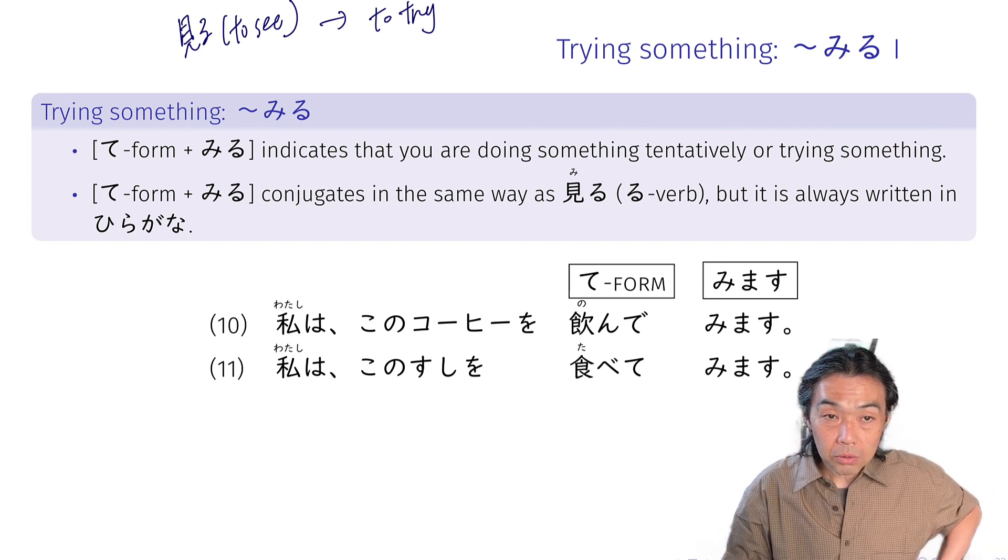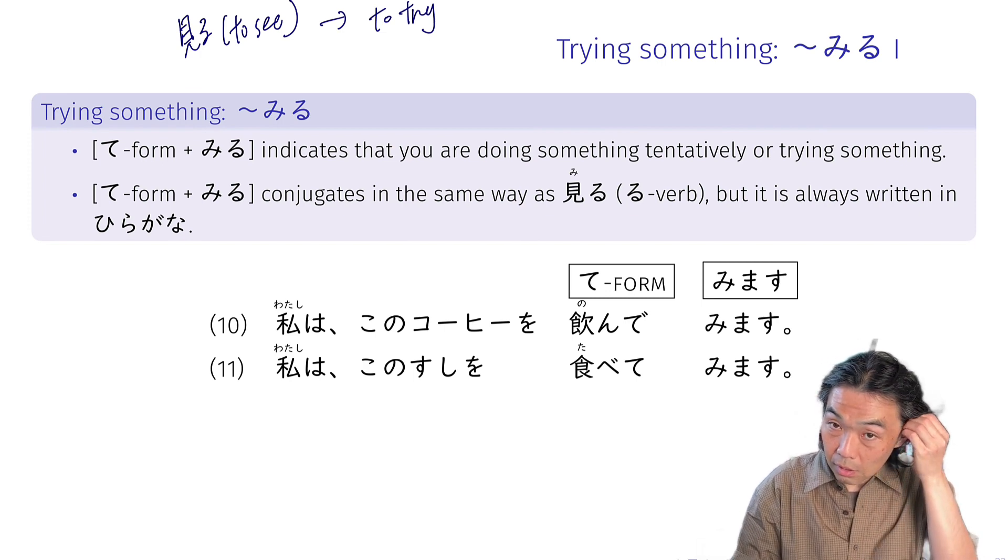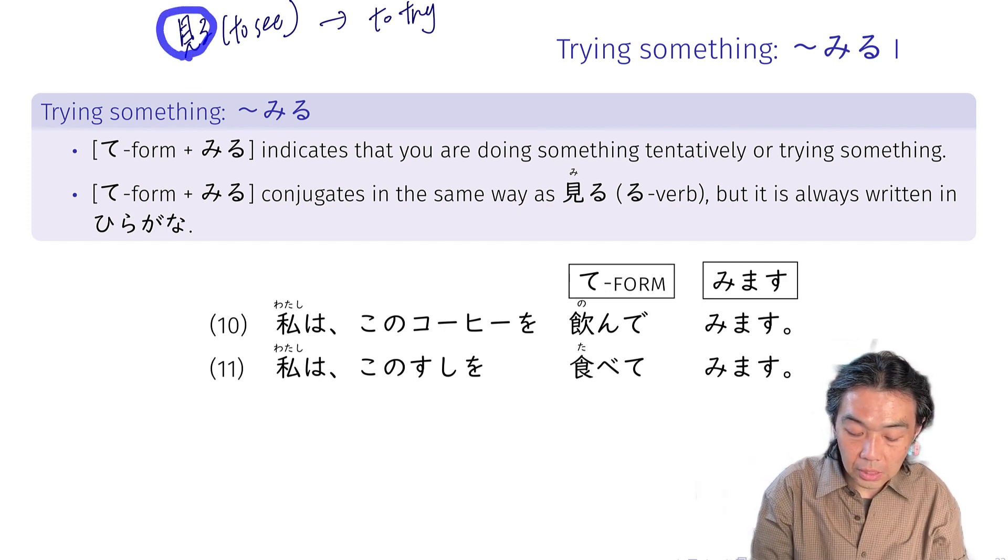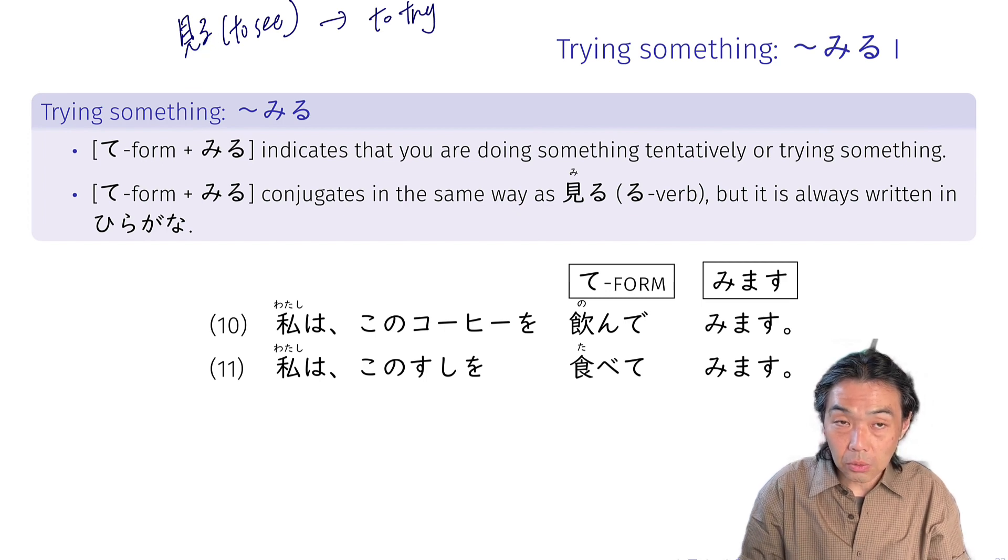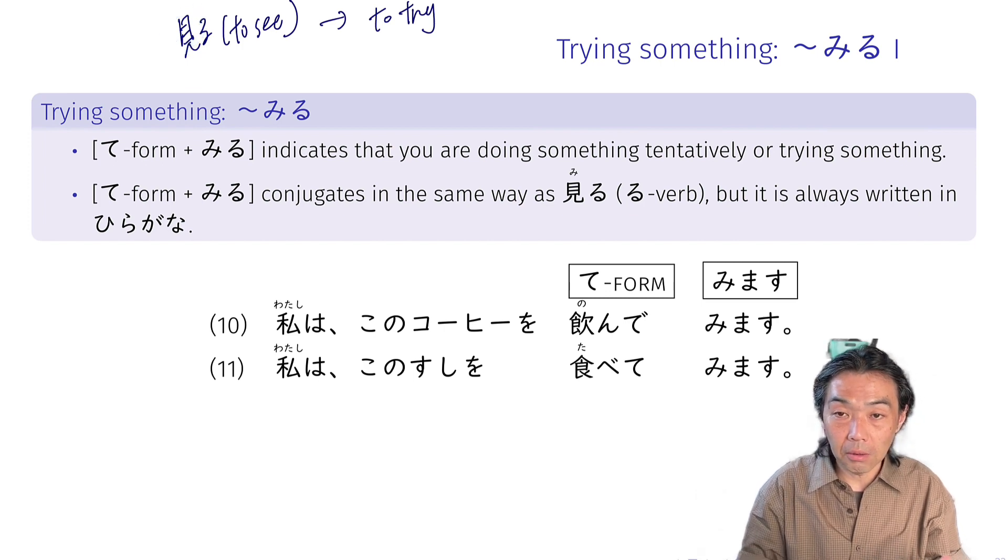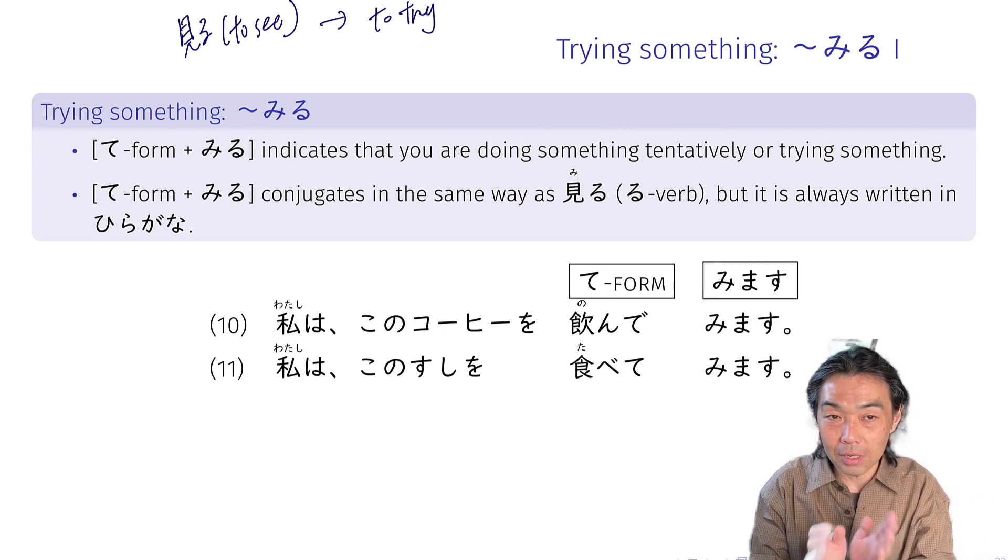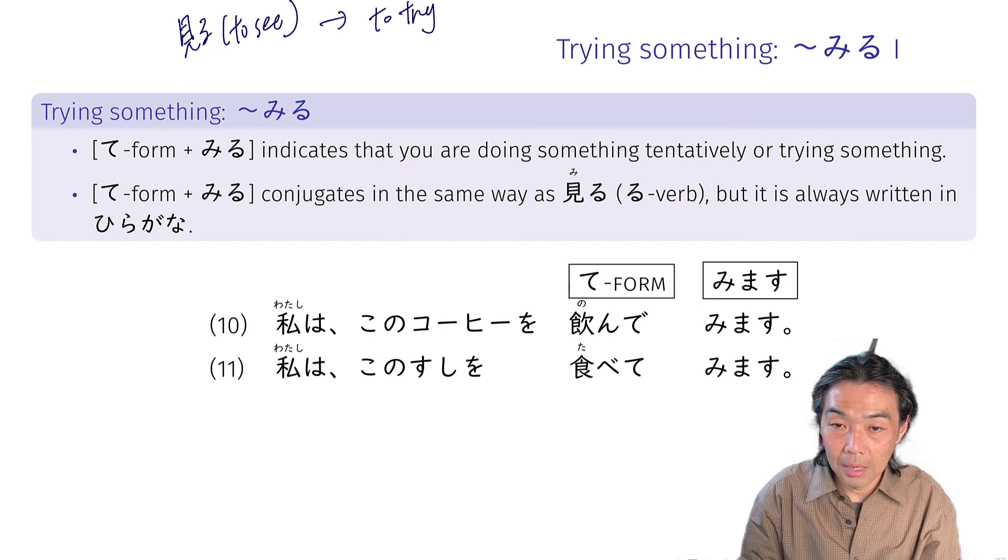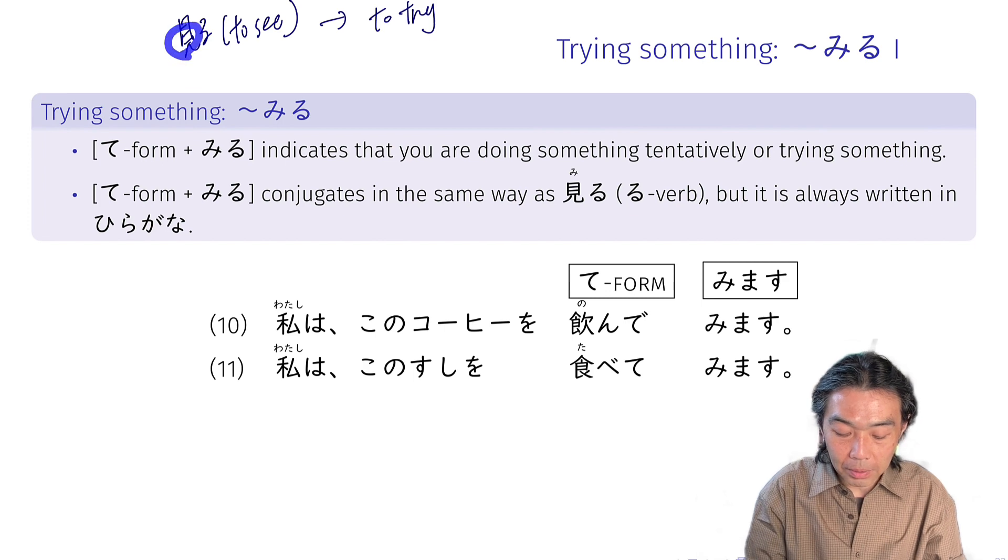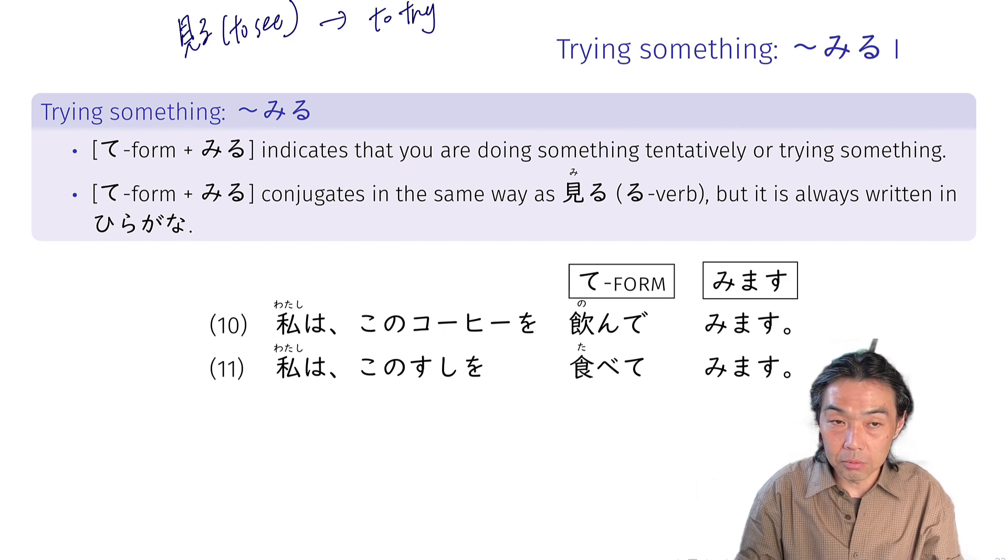Often, when you use miru with te form, we no longer use the kanji. Since the kanji indicates to see, instead of using this kanji, we just use simple hiragana. But originally, it's kind of like a verb separating into two different meanings. Some people might use the kanji when they use te form plus miru, so there is no absolute rule for that.